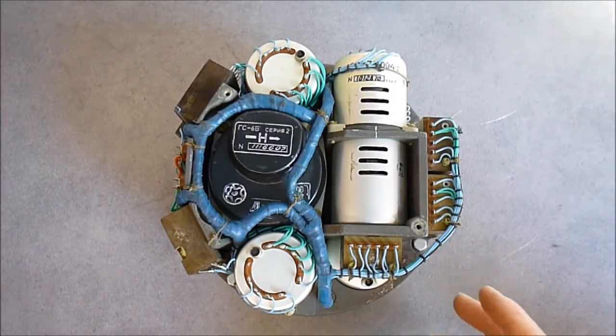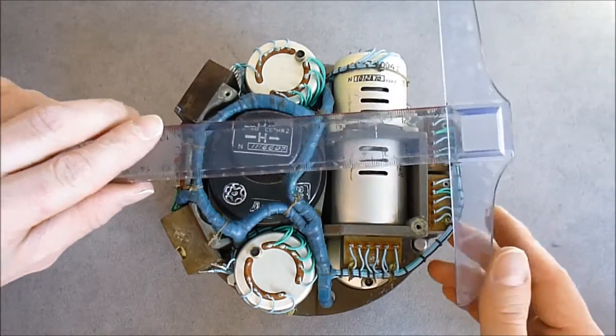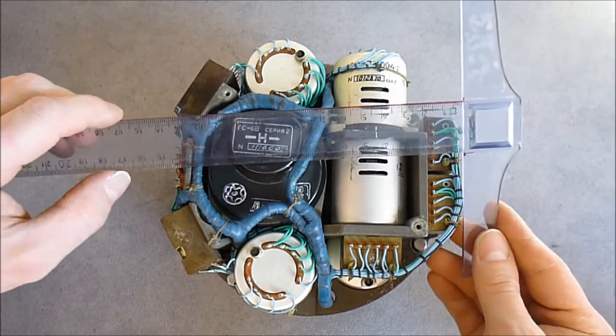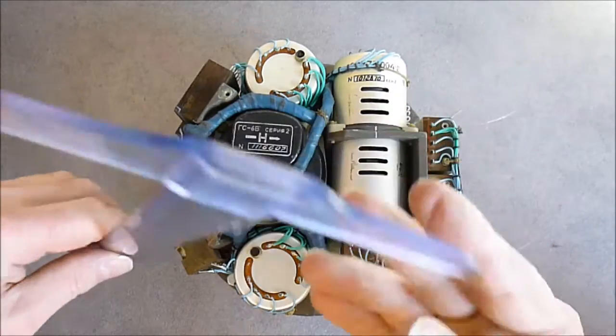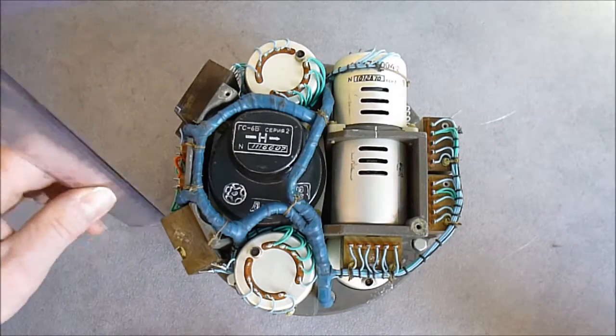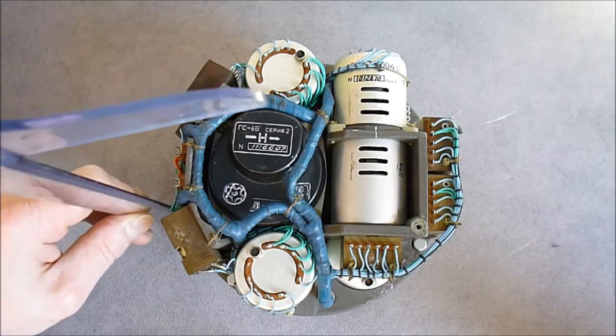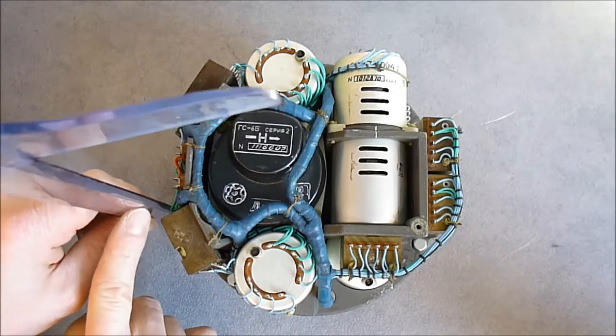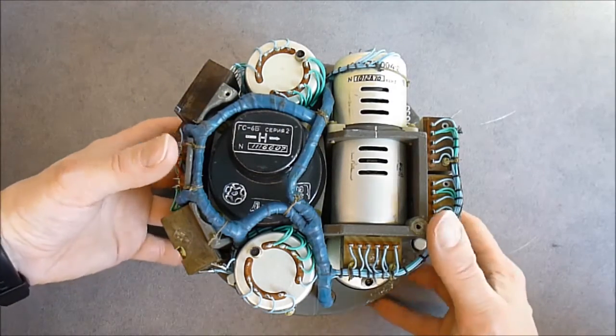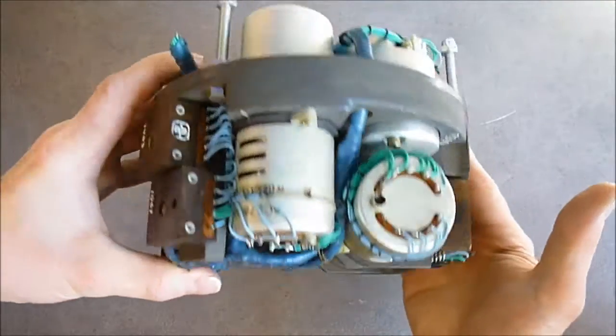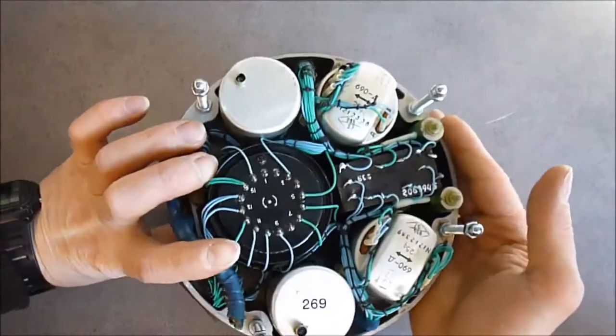So as you can see, it is a cylinder thing. It is 16 centimeters in diameter and 12 in height. We have a lot of things on this thing, as you can see.